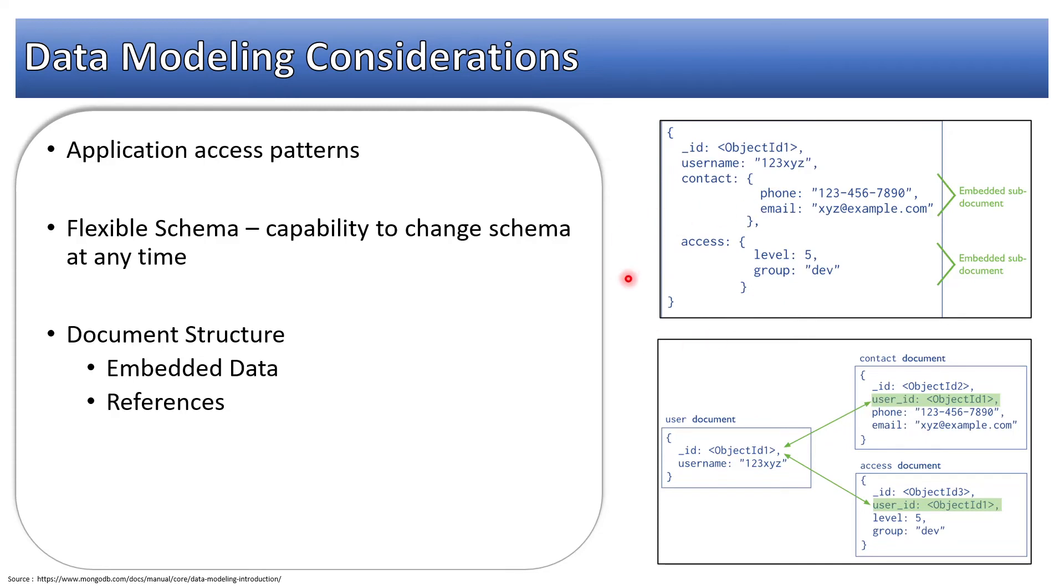These three are the biggest considerations while designing the schema in MongoDB. Please make sure you understand all these things. Biggest impact is of access pattern - if you know your access patterns, then you will be in a position to decide whether it is embedding or referencing, and that will lead to efficient performance of your MongoDB database.